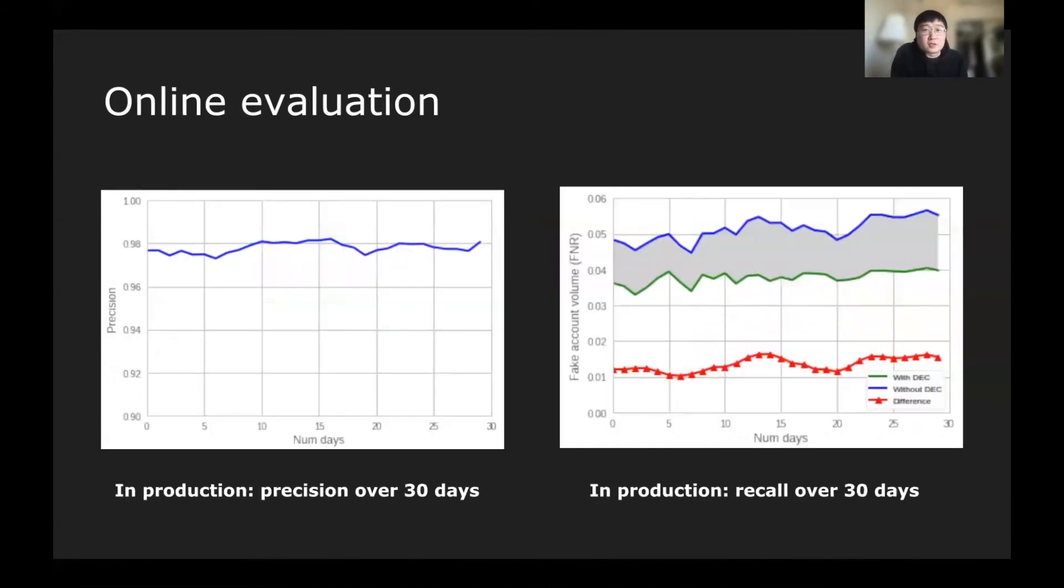Moving on to the online evaluation result. We're trying to measure the precision and recall of the DEC model over the 30 days period of time on the production data. The left side shows the precision data, and you can see the precision is relatively stable around 98% over the 30 days. On the right side is the recall data. The Y axis shows the fake account volume. The blue line shows what is the fake account volume without DEC, and the green line shows the same stats with DEC. The delta here is represented using the red line. From the figure, you can tell that the red line is actually relatively stable over the 30 days, meaning the recall of the DEC system is stable against adversaries because we're able to take down a similar amount of accounts every day over the 30 days in production.